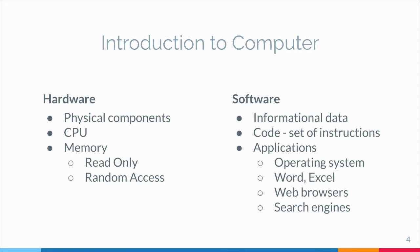Random access memory, RAM, is the memory available for the operating system, programs, and processes to use when the computer is running. RAM can be read from and written to for processing information and instructions.